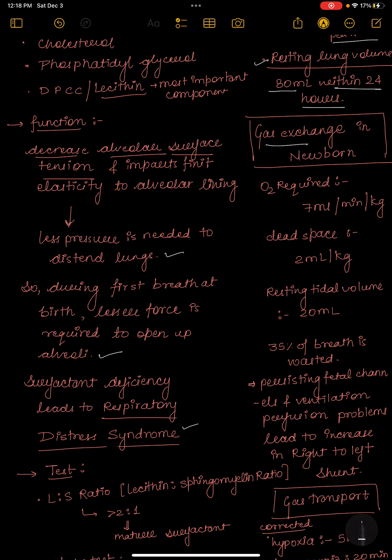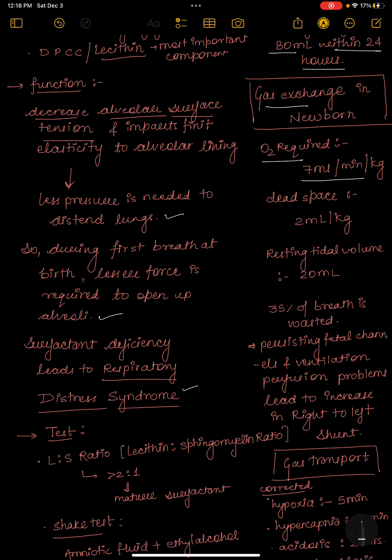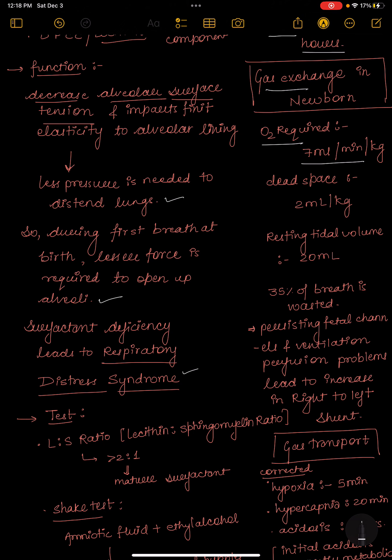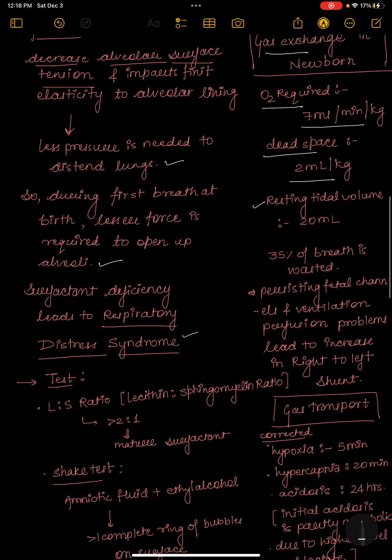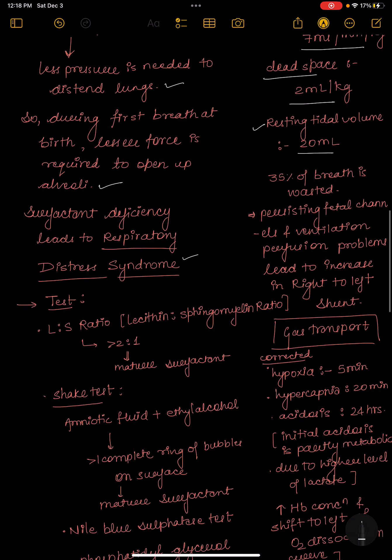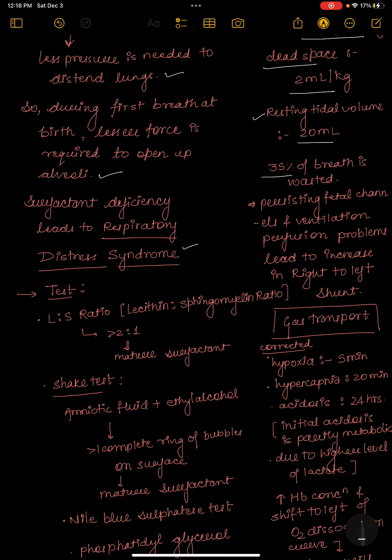Gas exchange in newborn: oxygen required is 7 ml per minute per kg, that is higher than what adults require. Dead space is 2 ml per kg. Resting tidal volume is 20 ml. 35% of breath is wasted as compared to adults where 30% of breath is wasted.